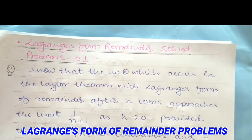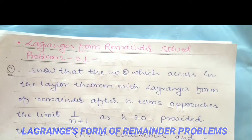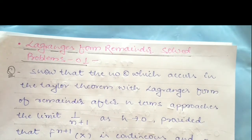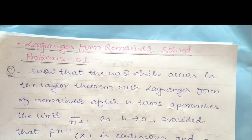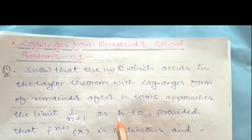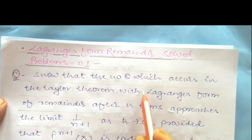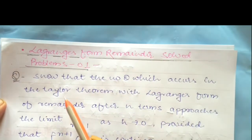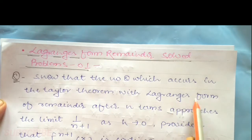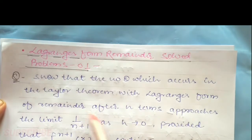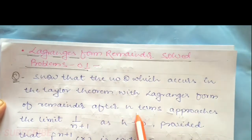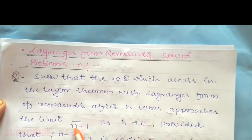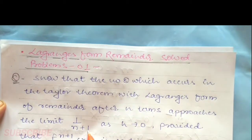This question is asked in university exams many times. The question is: the theta occurring in the Taylor theorem with Lagrange form of remainder after n terms approaches the limit 1 upon n+1.